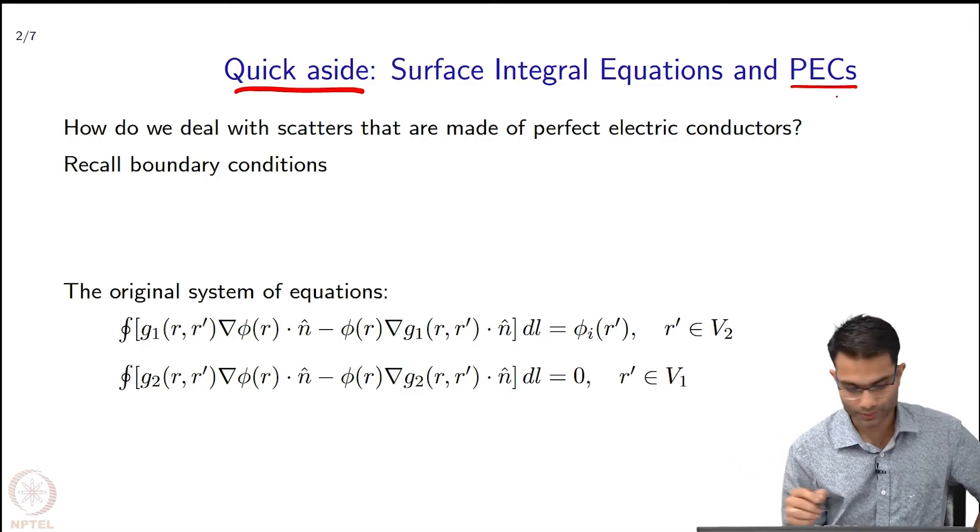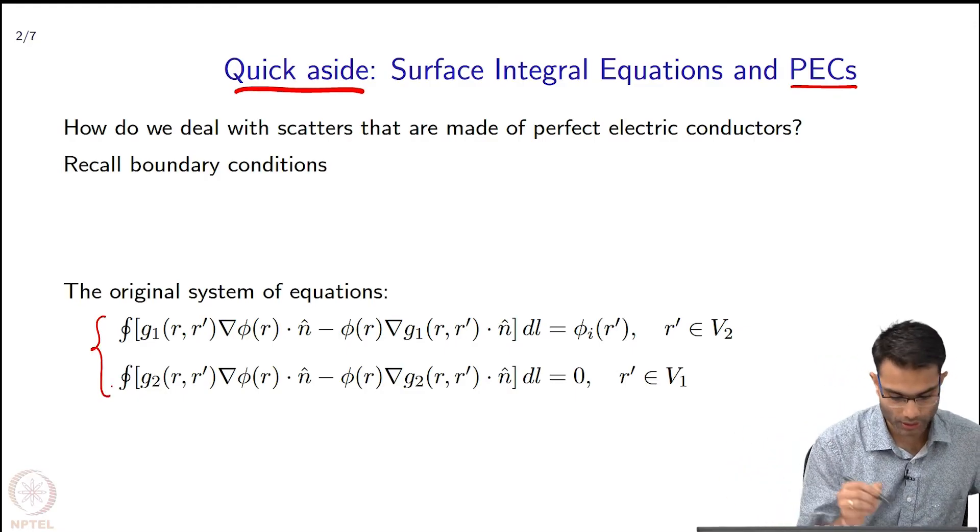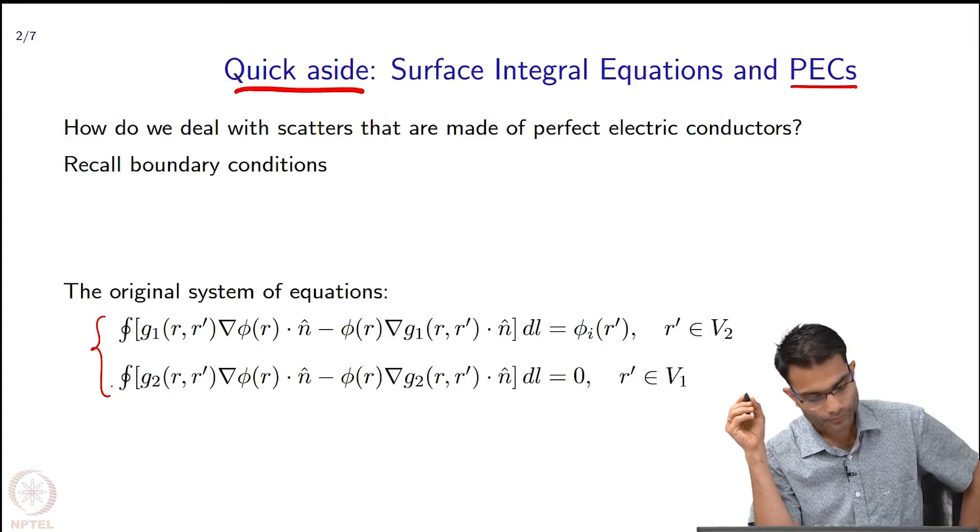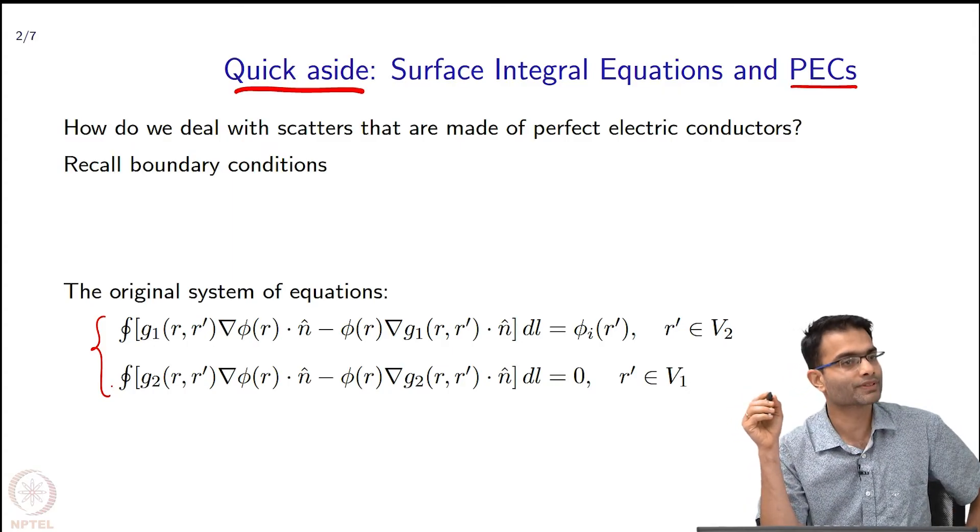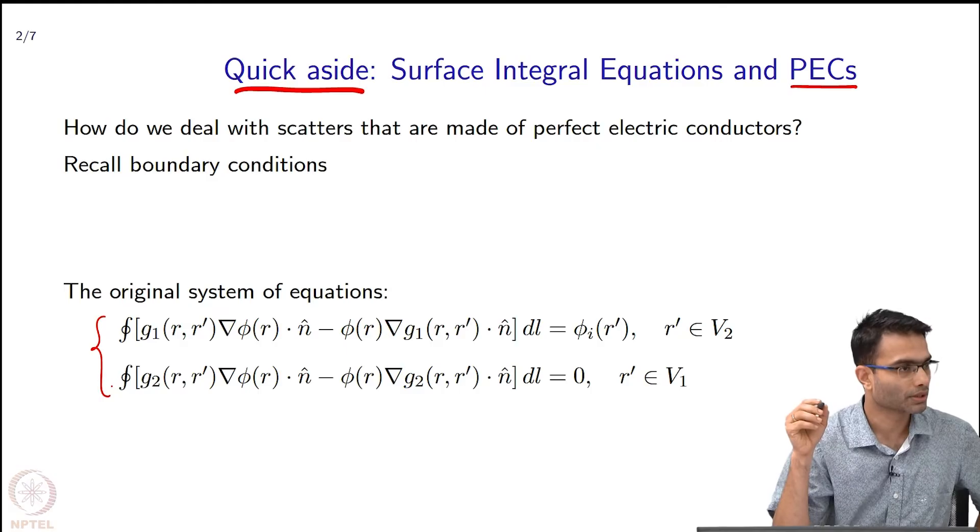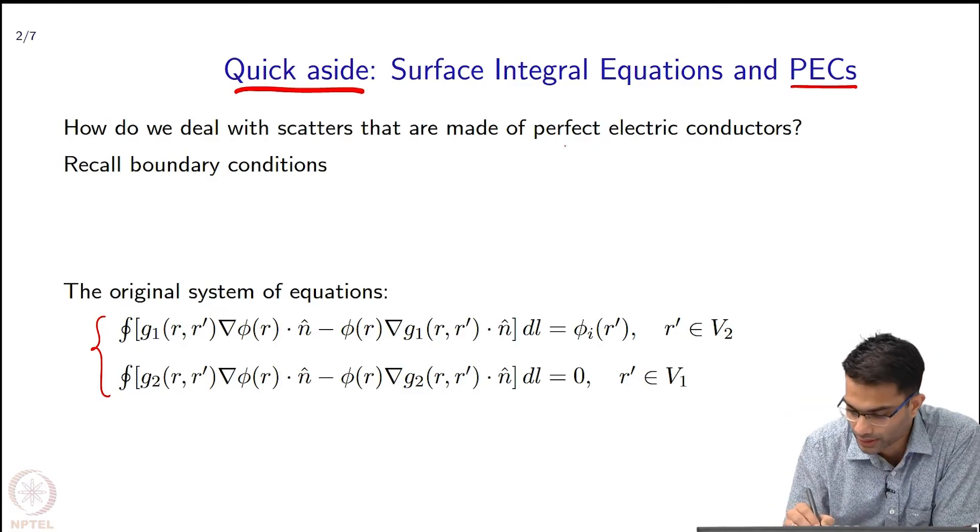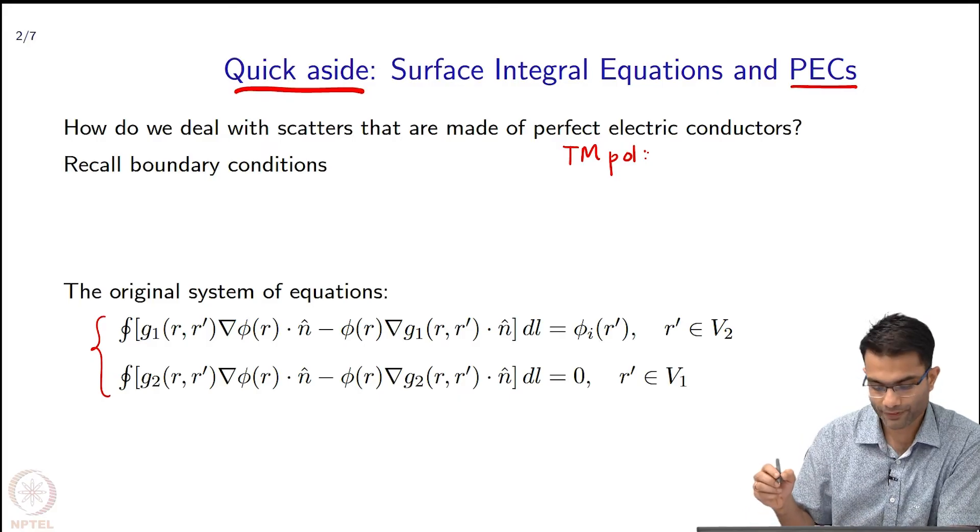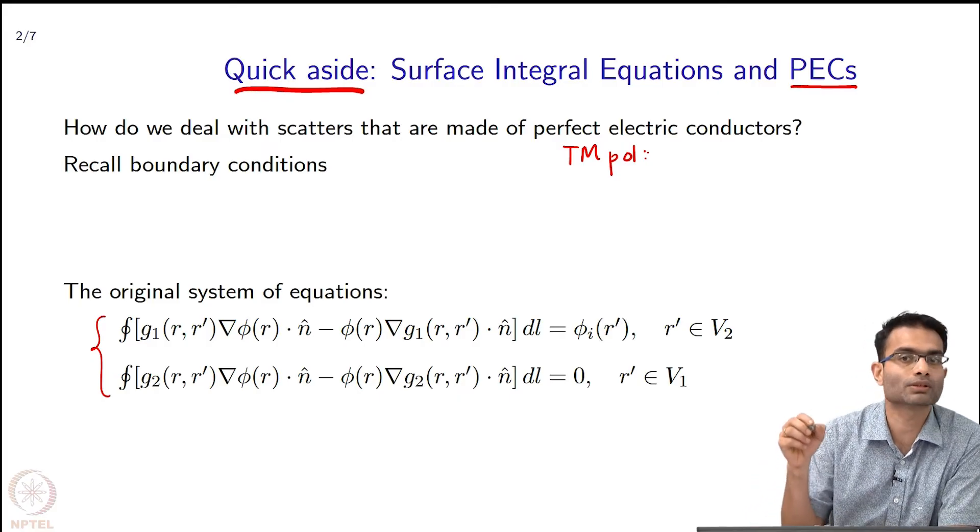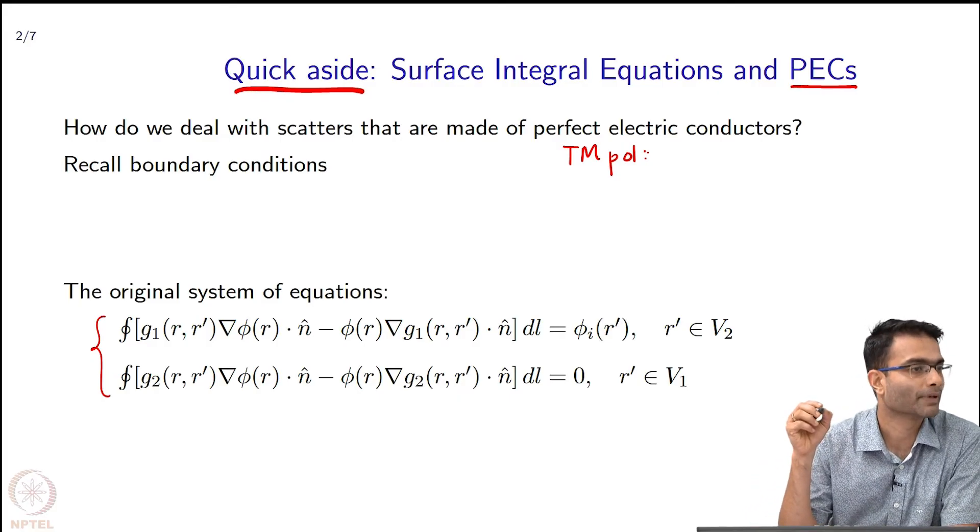So, in the formulation that we had so far which is shown over here, this was our original formulation. We had given a physical interpretation to the variables, right? So, when I looked at TM polarization, what was my φ? What physical quantity was my φ? Electric field, right.